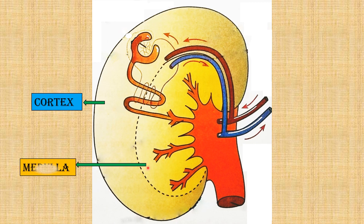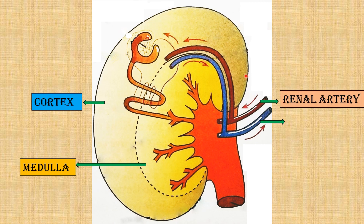The second part is the medulla. The medulla is the inner region of the kidney. So the cortex is the outer region and the medulla is the inner region. The kidney is responsible for the filtration of the blood.